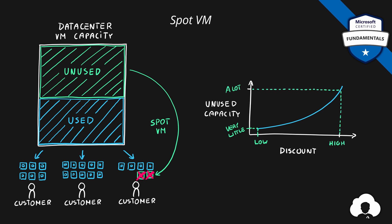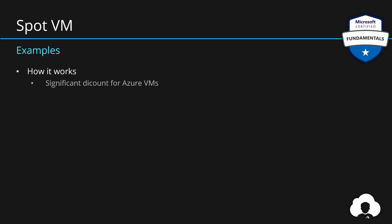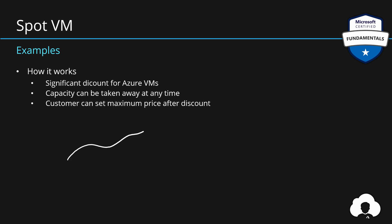If there's a lot of unused capacity the discount will be very high, so your cost will be very low. If there's very little unused capacity, the discount will be low and the price will increase. You purchase a regular virtual machine except it's a spot VM and you get a significant discount. The trade-off is that Microsoft can take away that capacity at any time without notice. Additionally, you can set a maximum price threshold — if the price exceeds it, you can evict the VM; if it stays below, you keep it.